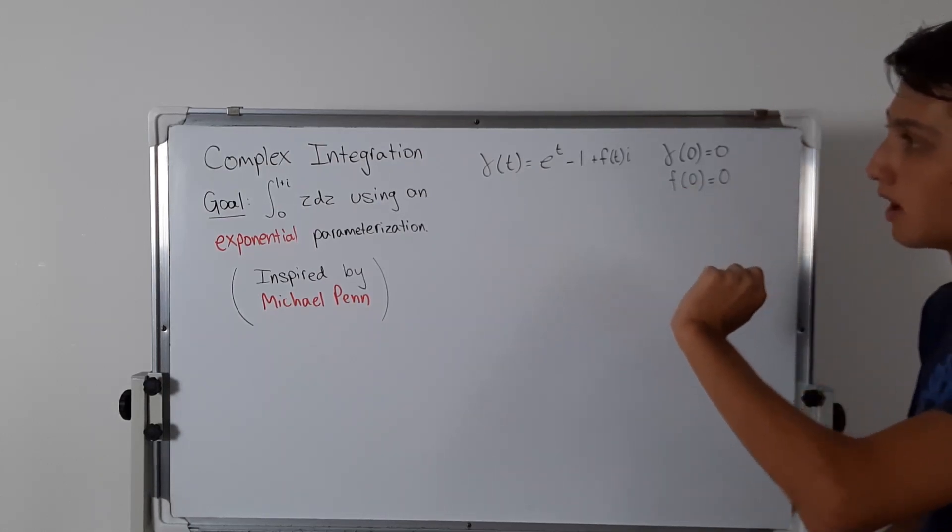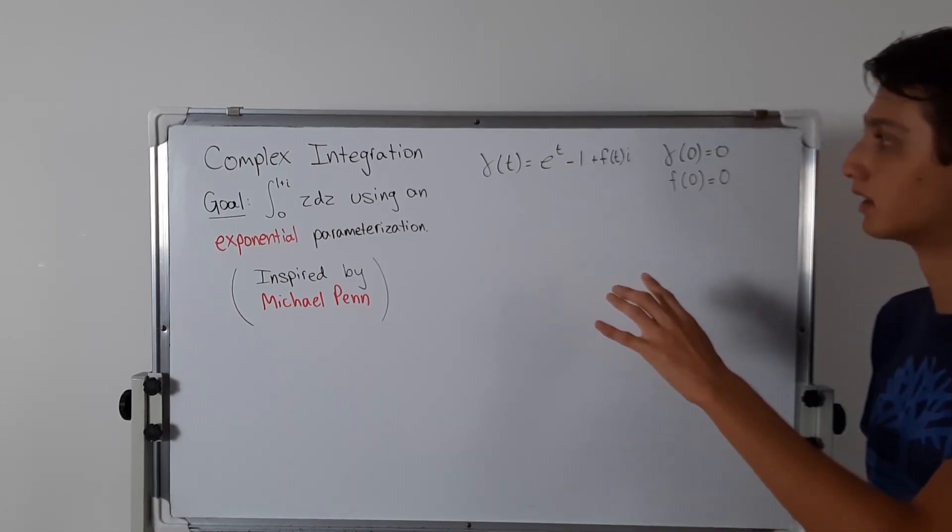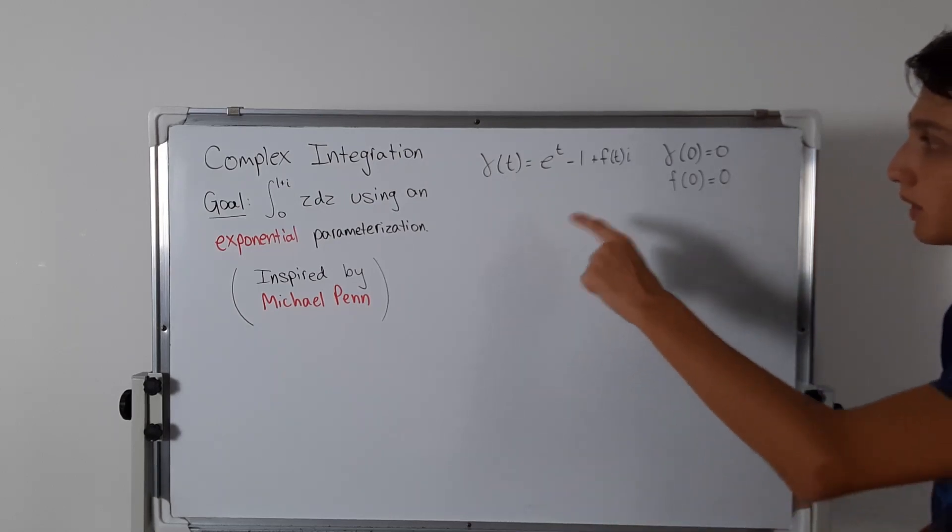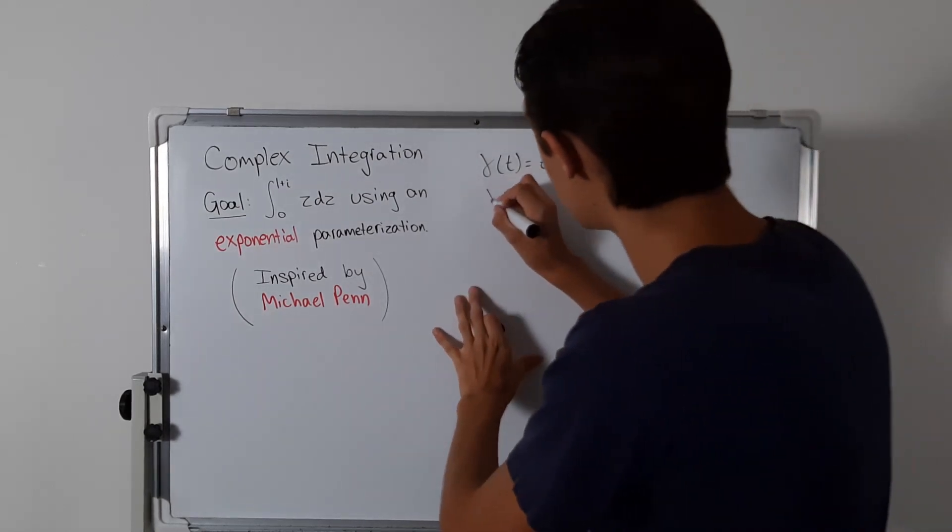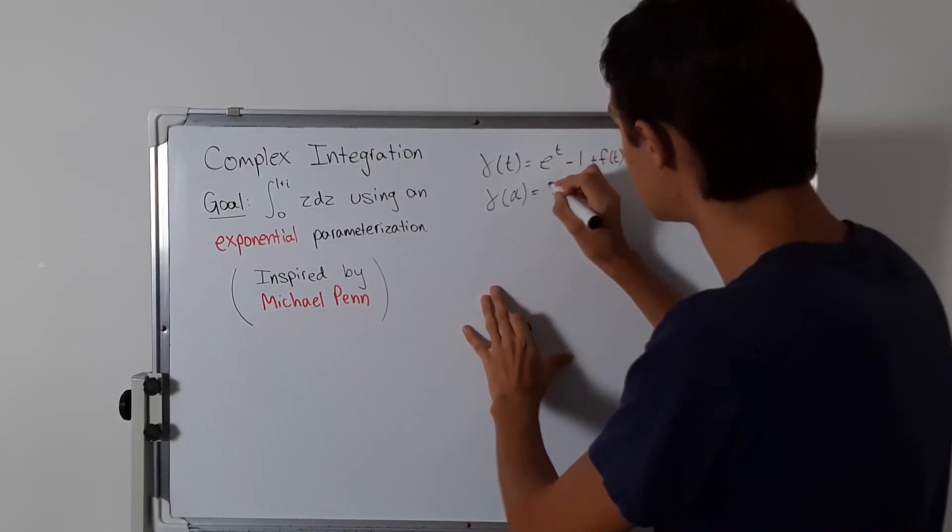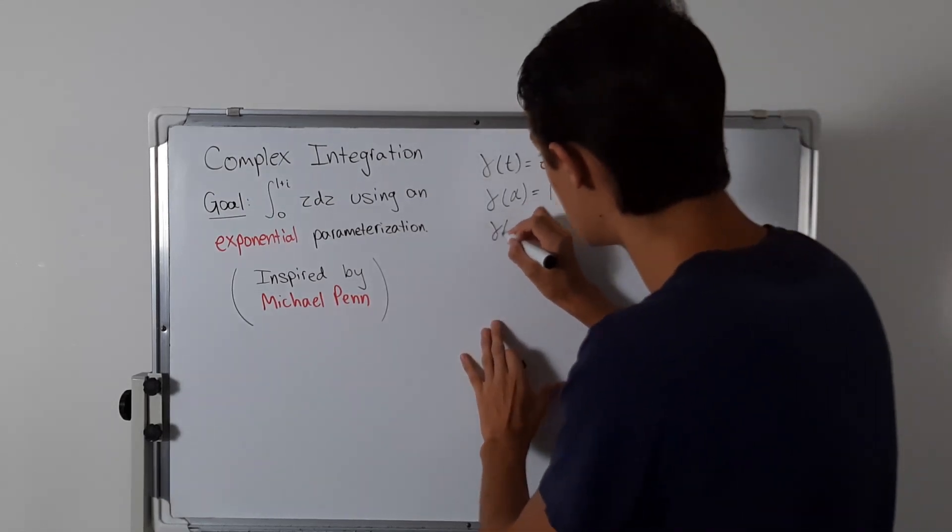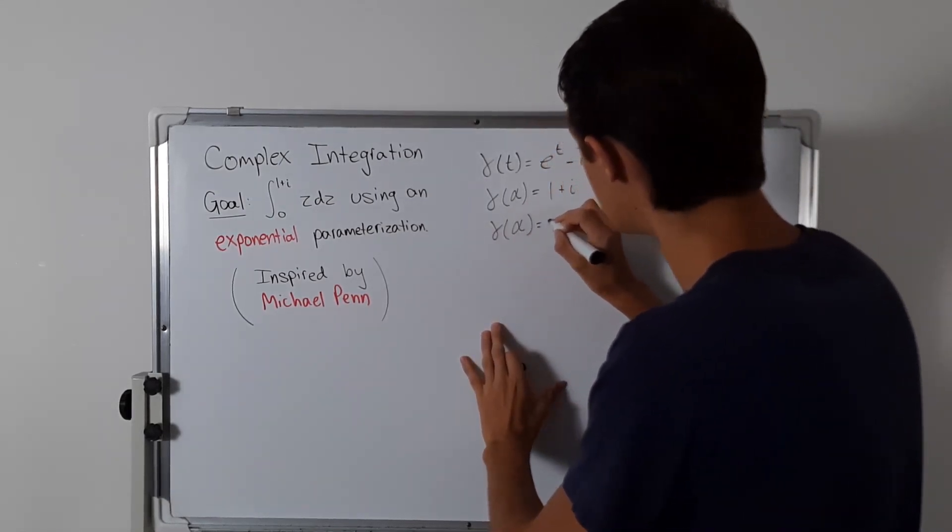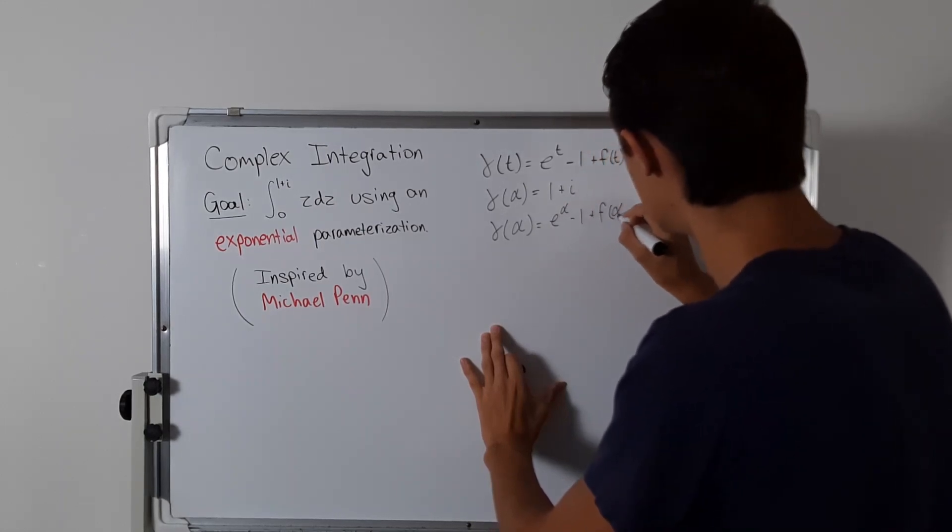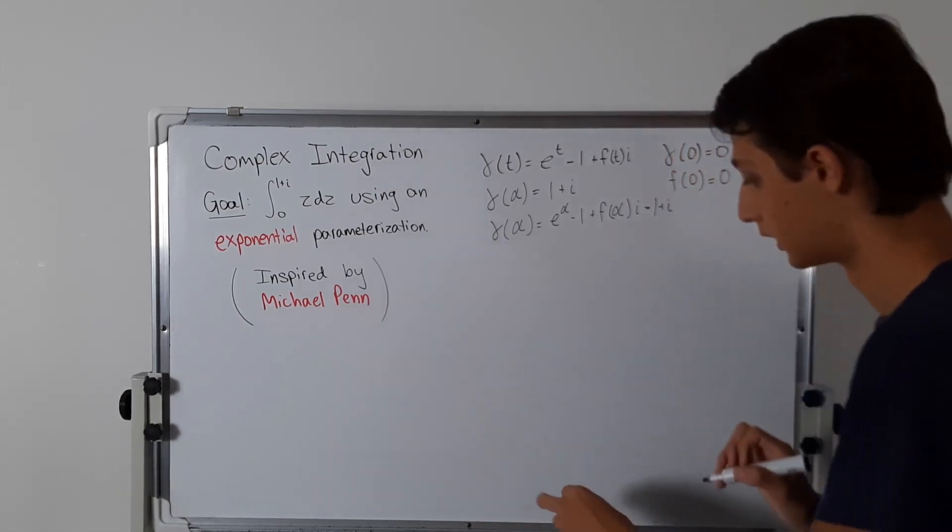We can just compare the parts. What we also need is some gamma of alpha, where alpha is a real number, equal to 1 plus i. So gamma of alpha equals e to the alpha minus 1 plus f of alpha times i equals 1 plus i.